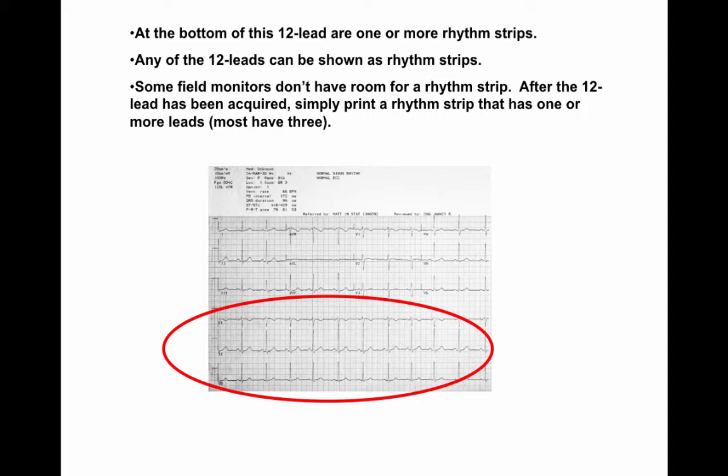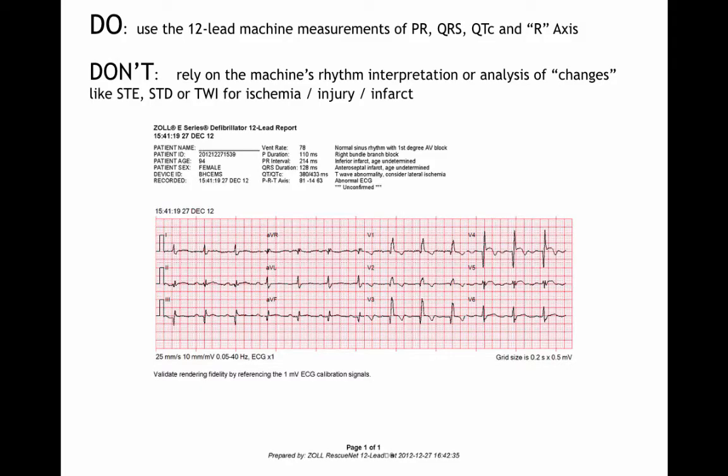You really can't see rhythm very well in a standard 12-lead, so we call it a rhythm strip. Most field monitors don't have room for that, so after you run your 12-lead, you may also want to run a rhythm strip so that you can see a longer length of the same lead. That is one way to work around some of the limitations of field 12-lead monitors.